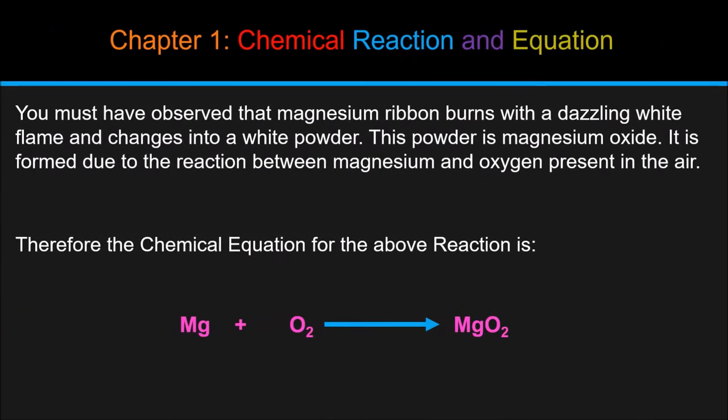You must have observed that magnesium ribbon burns with a dazzling white flame and changes into a white powder. This powder is magnesium oxide. It is formed due to the reaction between magnesium and oxygen present in the air. Therefore the chemical equation for the above reaction is Mg plus O2 equals MgO2.